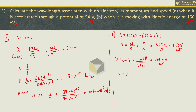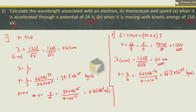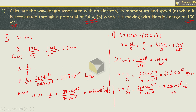For momentum in this case, we again use the formula h by lambda: h is 6.63 × 10⁻³⁴ divided by wavelength 0.1 × 10⁻⁹ meters. This gives us the velocity as 7.286 × 10⁶ m/s.